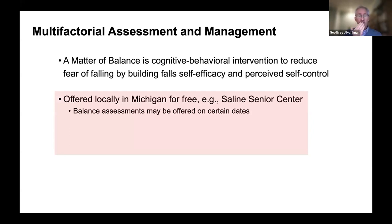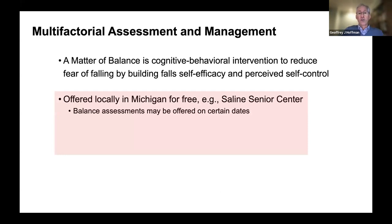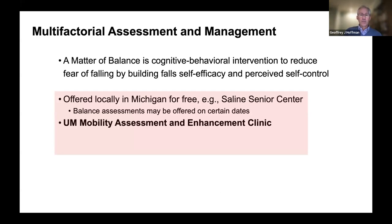A program particularly worth noting is called A Matter of Balance — a clinically proven program to reduce fall injury. It is a cognitive behavioral intervention to reduce fear of falling by building fall self-efficacy and perceived self-control. For Michiganders, it's offered throughout the state for free. Locally, it's at the Saline Senior Center. The University of Michigan also has a wonderful mobility assessment and enhancement clinic on Wednesday afternoons at the East Ann Arbor Plymouth Road clinics.